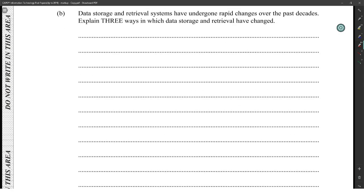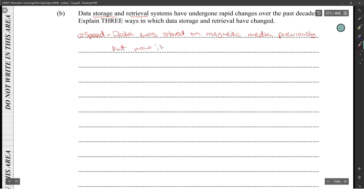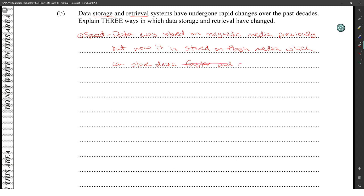Six marks. Three ways. One: the speed — but it said data storage and retrieval. Data was stored on magnetic media previously, but now it is stored on flash media, which can absorb data faster and store and retrieve faster.